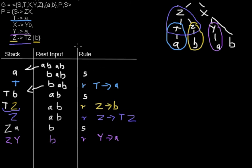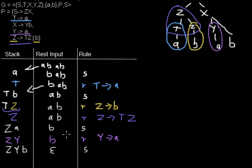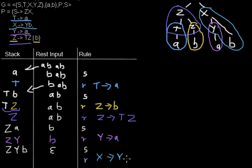Now the next step is to shift the B so I can combine it with Y to get X. I shift B onto the stack, and the rest input is now empty — I put the empty word there. In the next step I reduce using the rule X derives to YB. The rest input is not touched; there is nothing left to touch. I replace Y and B, which are the right-hand side, by X.